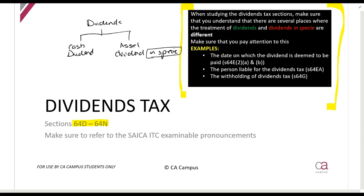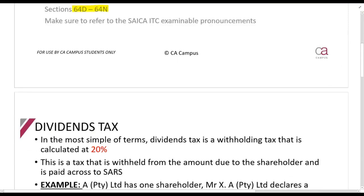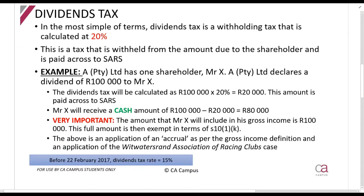That means you are receiving an asset instead of cash. The date when the dividend is declared is different between a dividend in specie and a cash dividend. The person who is liable for paying the dividends tax is different, and how the tax is withheld is also very different. So let's start with dividends tax.